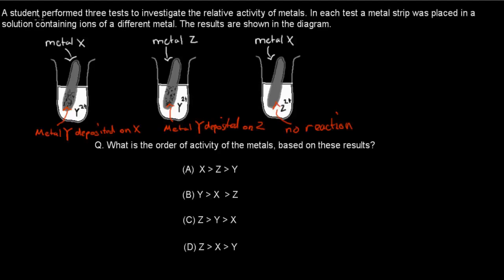The second question: a student performed three tests to investigate the relative activity of metals. In each test, a metal strip was placed in a solution containing ions of a different metal. In diagram one, metal X is present and metal Y deposits on it. In diagram two, metal Z is present and metal Y deposits on Z. In diagram three, metal X is present with Z ions in solution, but nothing happens. What is the order of activity of these metals?